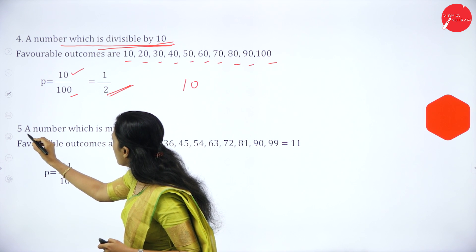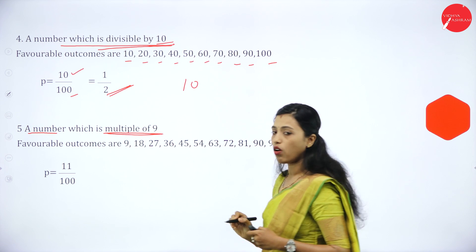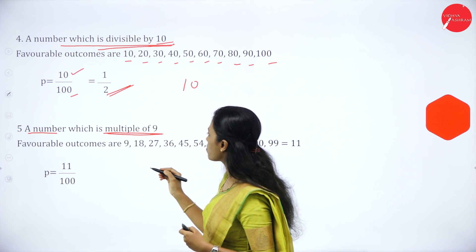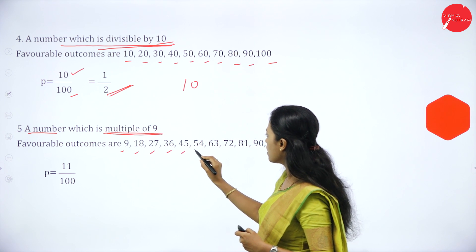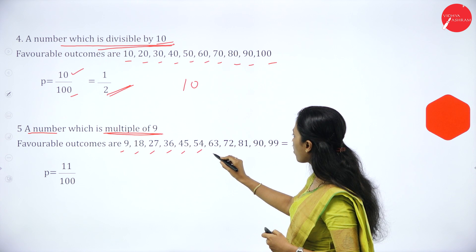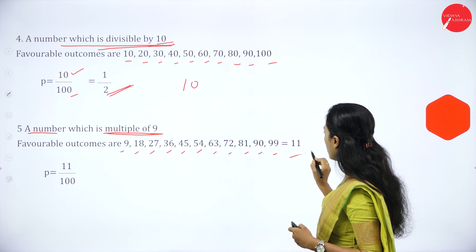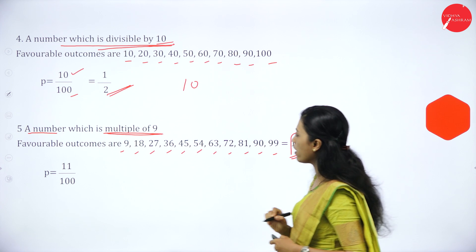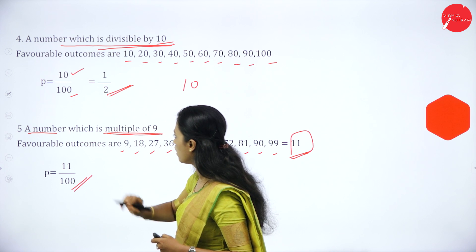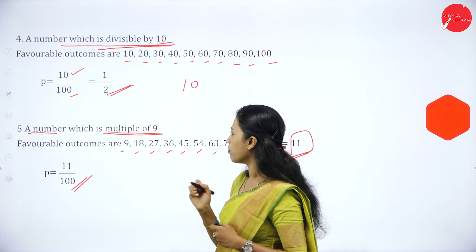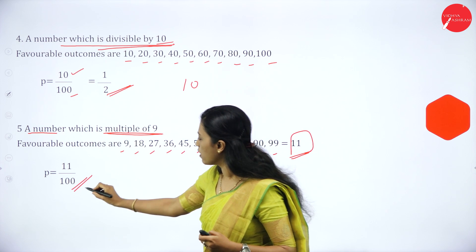Next: a number which is a multiple of 9. The multiples of 9 from 1 to 100 are: 9, 18, 27, 36, 45, 54, 63, 72, 81, 90, and 99 — 11 possible outcomes. So P = 11/100. The probability of getting a number which is a multiple of 9 is 11/100.